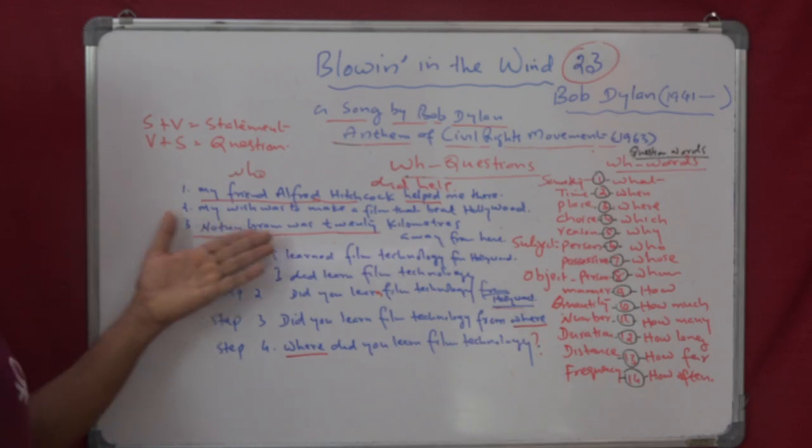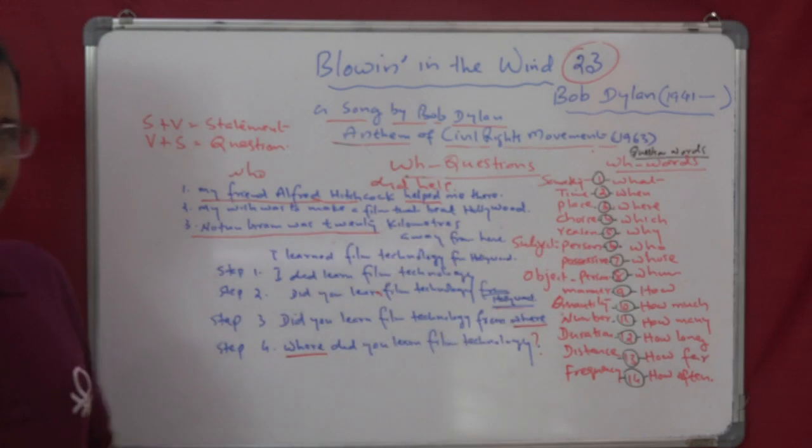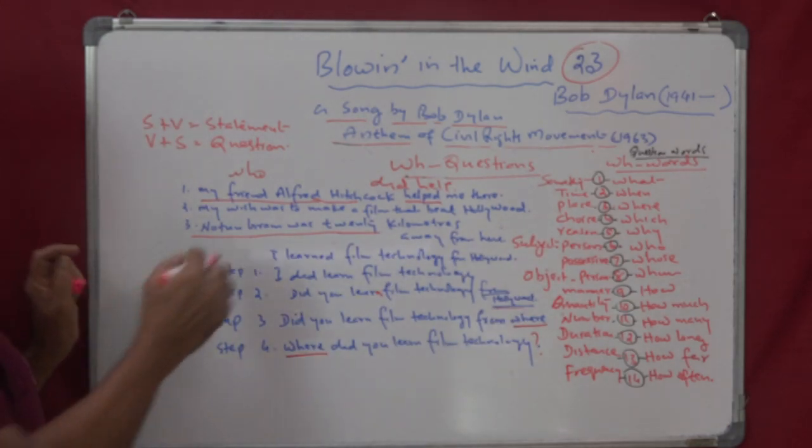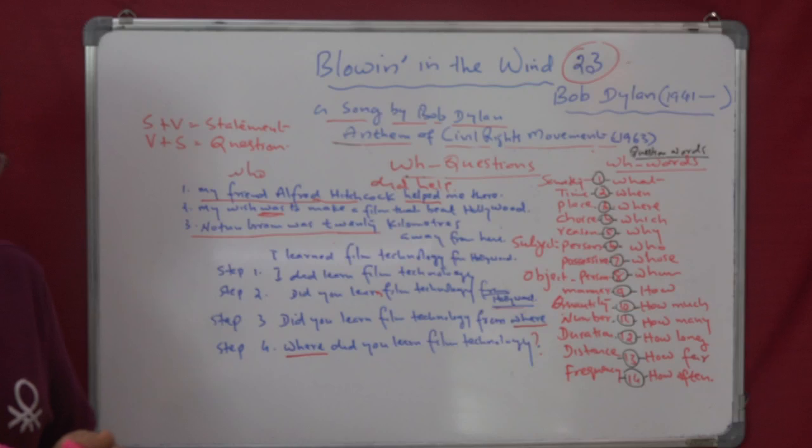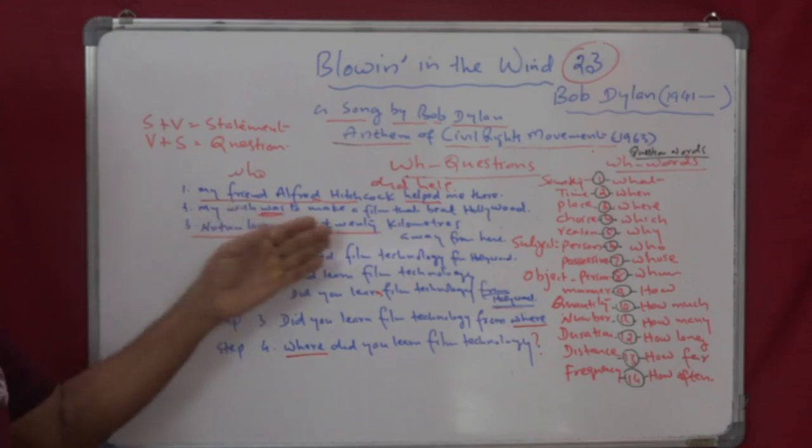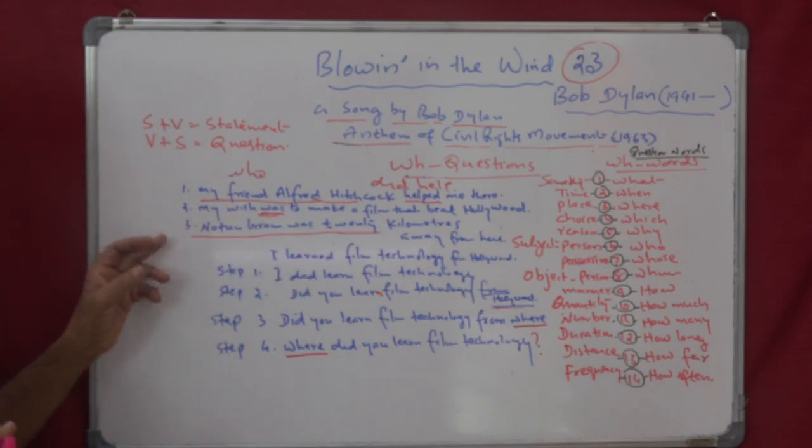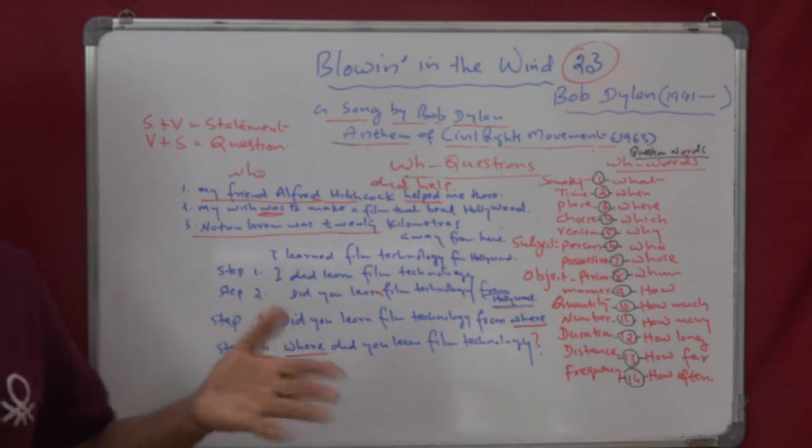And the next one, my wish was to make a film that beat Hollywood. Now, here the verb is an auxiliary. So, there is no need of inserting do. All you have to do is invert it and write the question word. My wish was, so, my something. For something, what is the question word? For something, the question word is what. So, what was your wish? My wish was to excel.